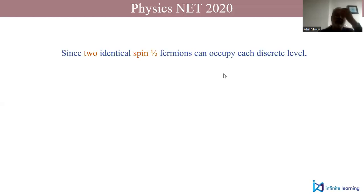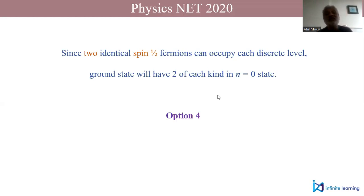The problem is very easy. You can see that two identical spin-1/2 fermions can occupy each discrete level, one goes spin up and another goes spin down. So I can put two fermions of mass m and two fermions of mass 4m in my ground state.